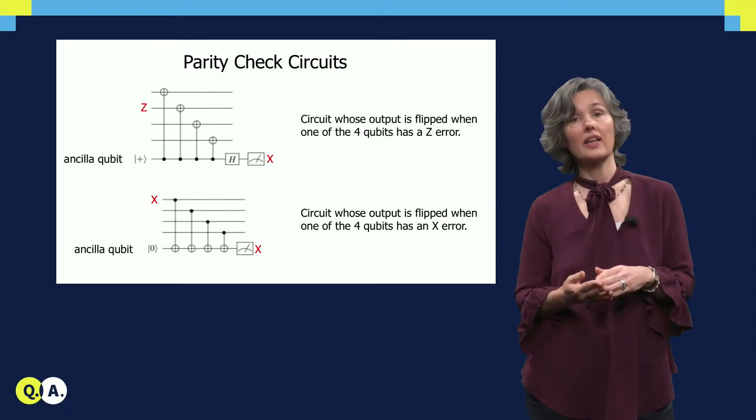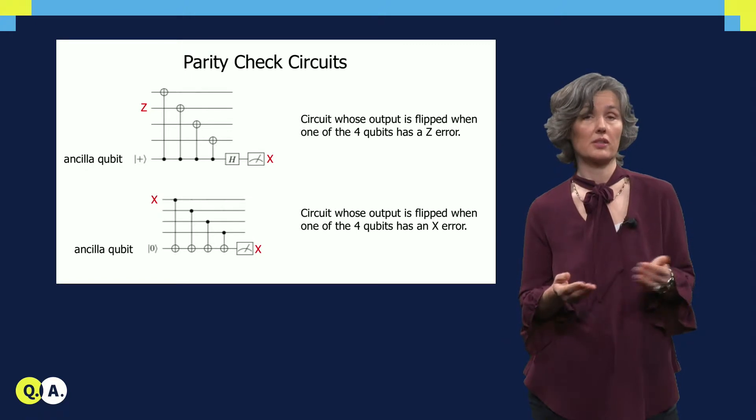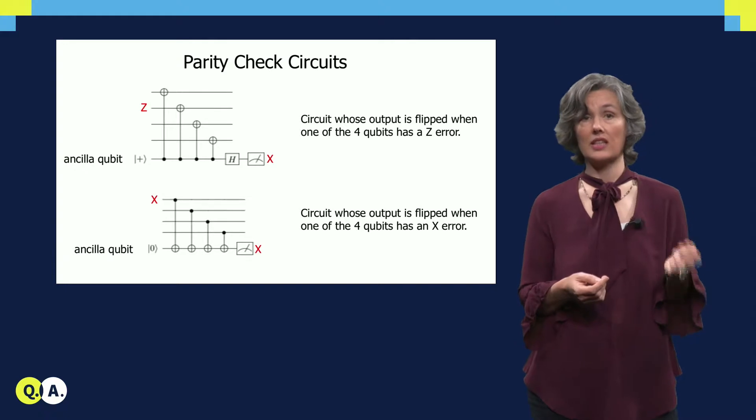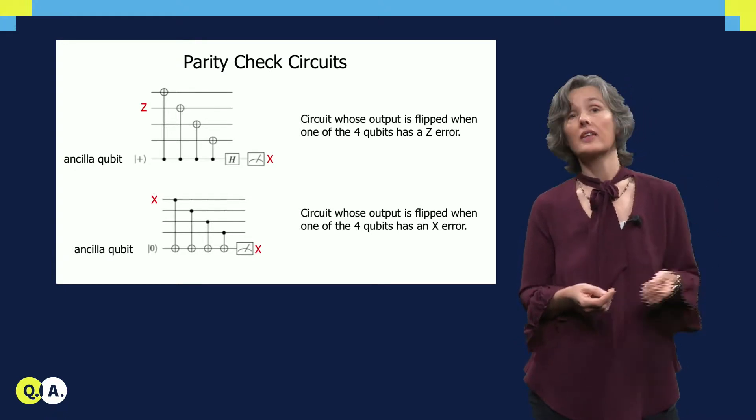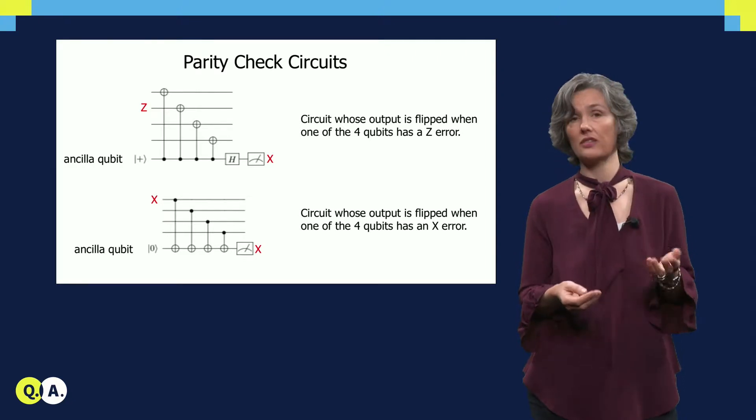For example, we can have circuits which look at the parity of a subset of four qubits, as you see on the slide. Now if any of the qubits has a z error on input, the ancilla qubit will be flipped at the end, heralding the error. You can verify this yourself.